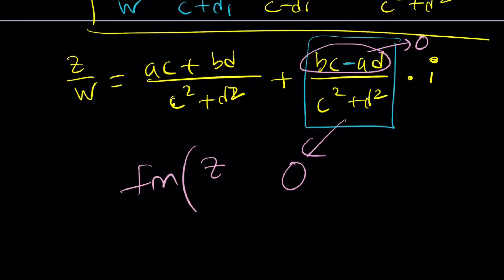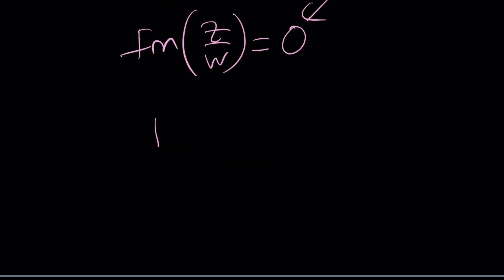So the answer is 0. Imaginary part of Z over W is 0 if absolute value of Z plus W is the same as absolute value of Z plus the absolute value of W.